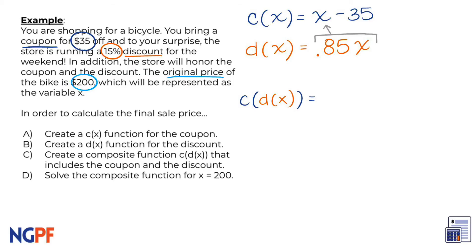You can watch our rule of 110 video to try the other method. For the direct substitution method let's combine the two functions. For this example this means that c(d(x)) equals 0.85x minus 35.